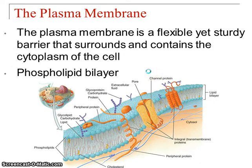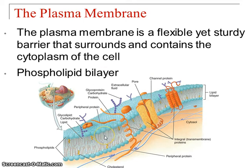First, we're going to look at the plasma membrane. The plasma membrane helps keep the environment separate — it helps us have a different internal environment, so we have different types of solutes on the inside of the cell versus the outside. It's made up of phospholipids — a phosphate head, phospholipid tails — and it's a phospholipid bilayer, meaning there are two layers of phospholipids.